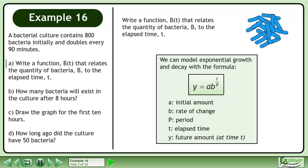We can model exponential growth and decay with the formula y equals a times b raised to the power of t over p, where a is the initial amount, b is the rate of change, p is the period, t is the elapsed time, and y is the future amount at time t.